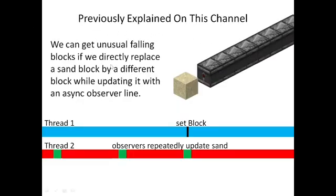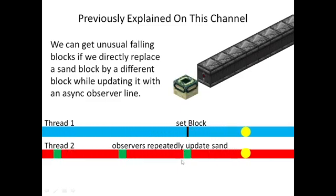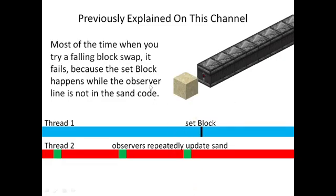To recall what falling block swaps are: a falling block swap is when you have an asynchronous observer line running on a different thread that constantly updates a sand block, and you then replace the sand block with a different block. You have a chance of getting a falling block swap where a different block falls down. The problem is the chance is roughly 1/10, and most of the time the sand block doesn't coincidentally land in precisely the part of the falling block code during which a swap can happen, so the block doesn't fall.